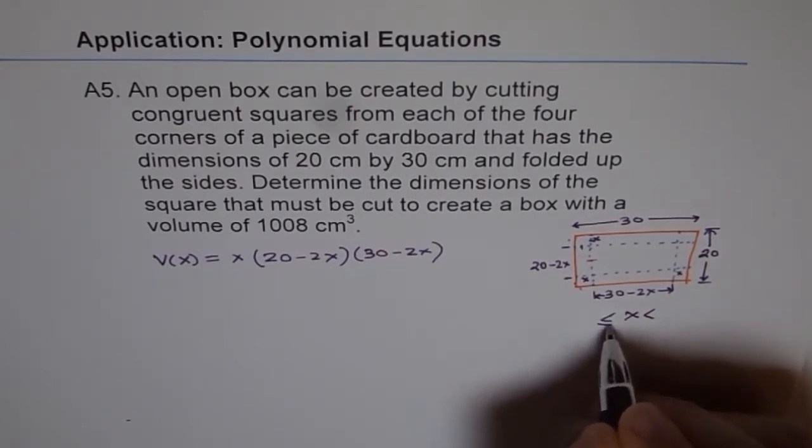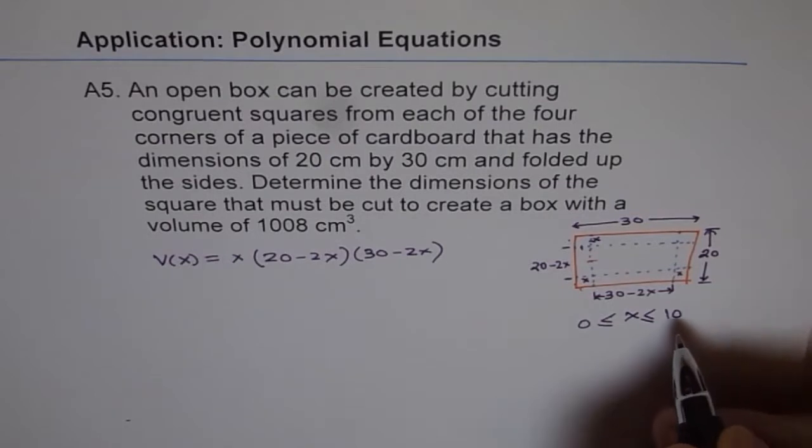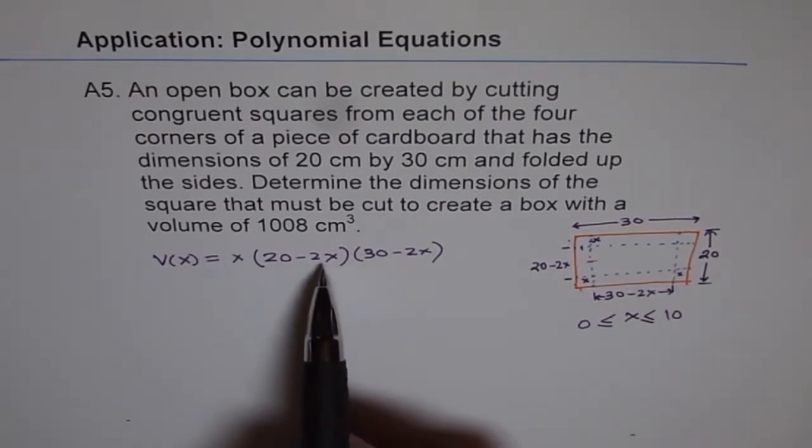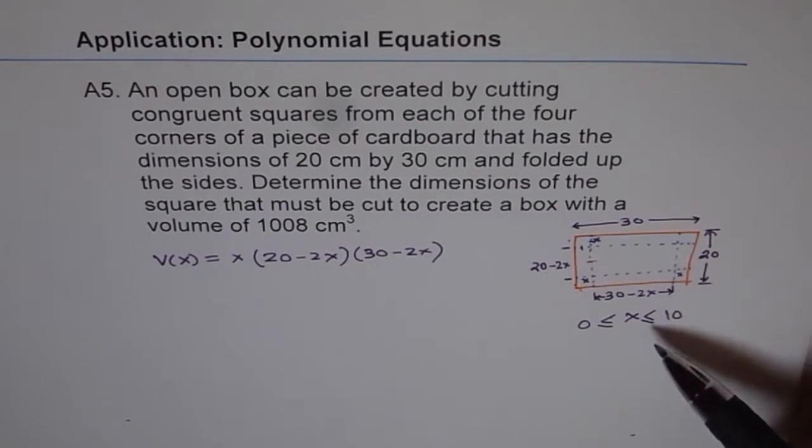Therefore the domain is that x is greater than or equal to 0. It cannot be negative. And second is that x is less than, we can write less than or equal to 10. Because if I have x more than 10, then this factor will be negative, and so the volume will be negative, which is not possible. So that gives us the complete situation of this problem.